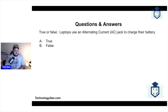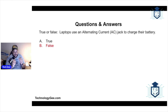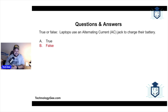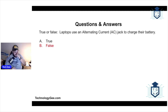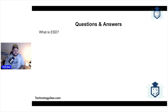Next question — true or false: laptops use an alternating current jack to charge their battery. The correct answer is false — they use a DC jack. Your power brick plugs into the wall and the connector that plugs directly into your laptop is called the DC jack. It takes AC electricity from the wall, converts it to DC in the power brick, and feeds that DC power directly into your laptop.